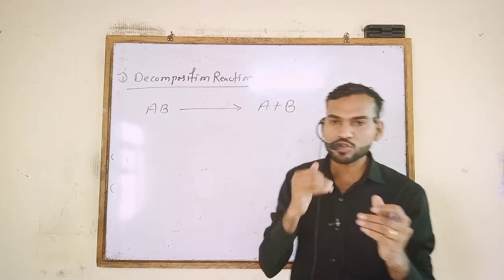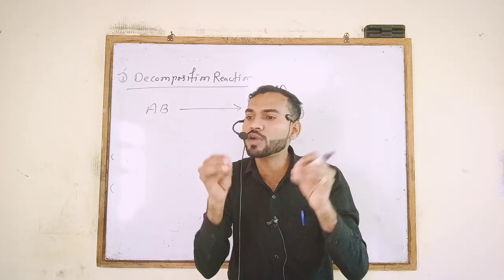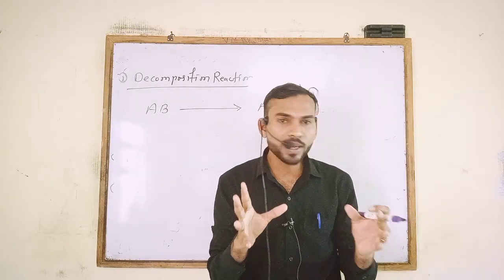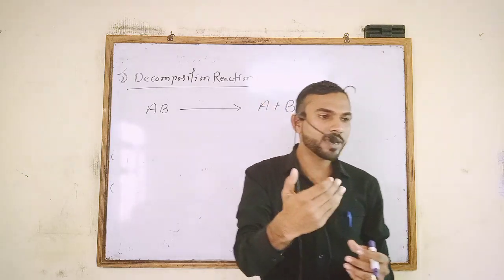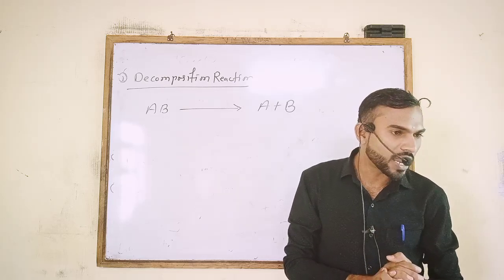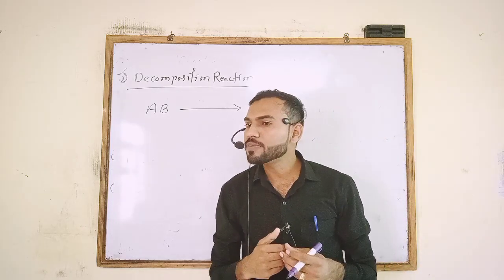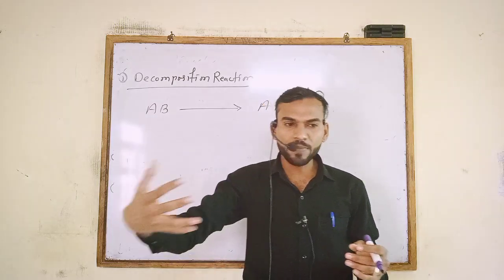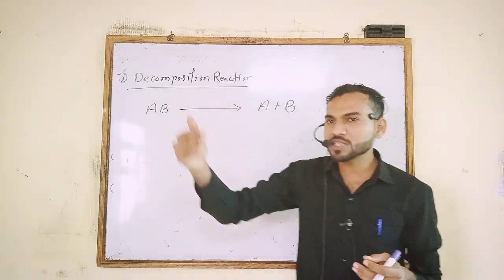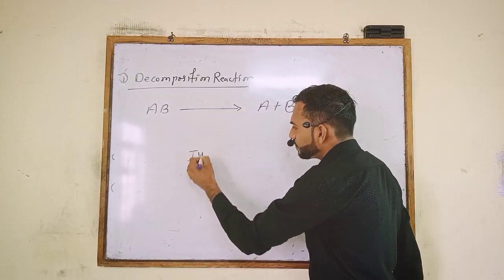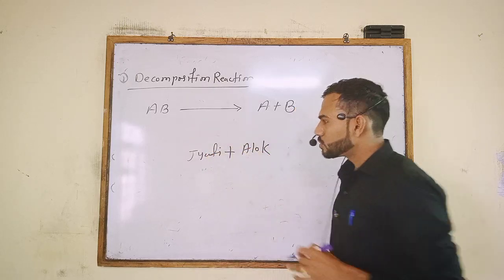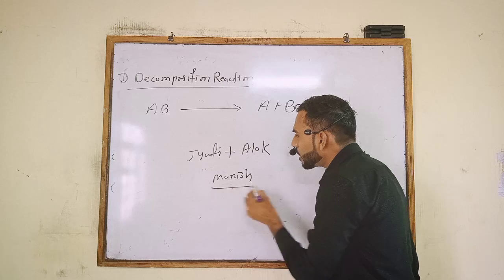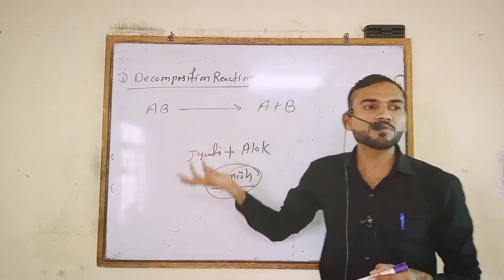Today you will see that in India the divorce rate will increase. So what will they do when they break apart? Jyoti and Alok, they had two children, but third time Manish came. So what happens in decomposition?